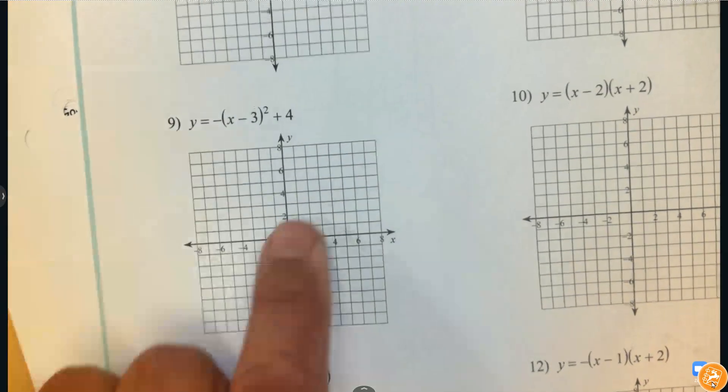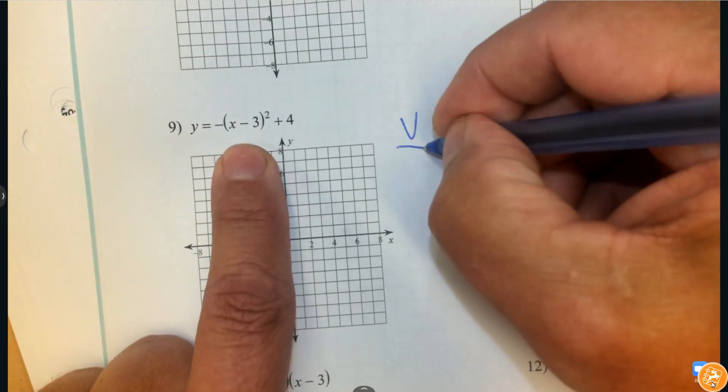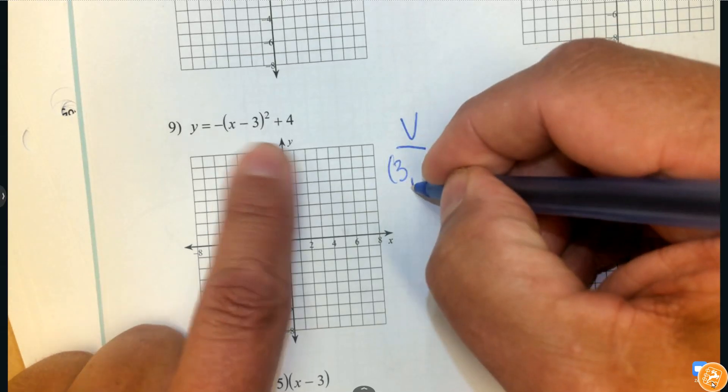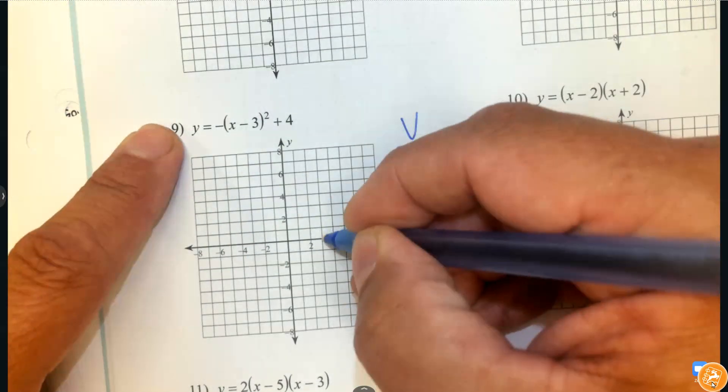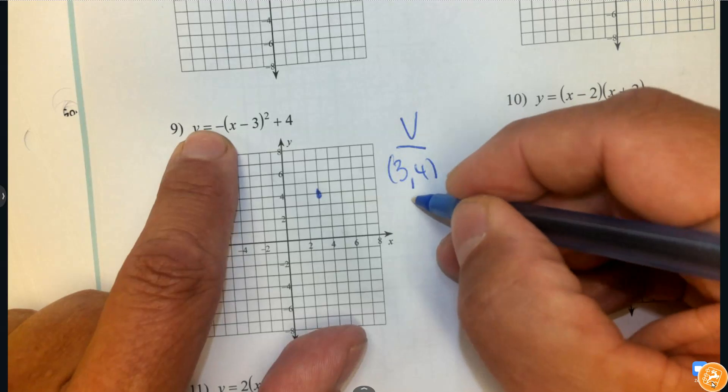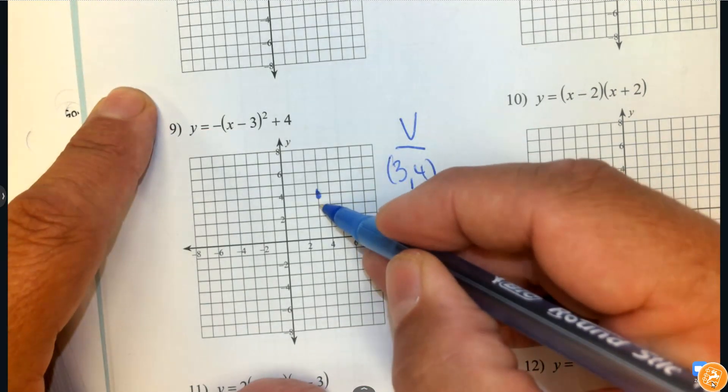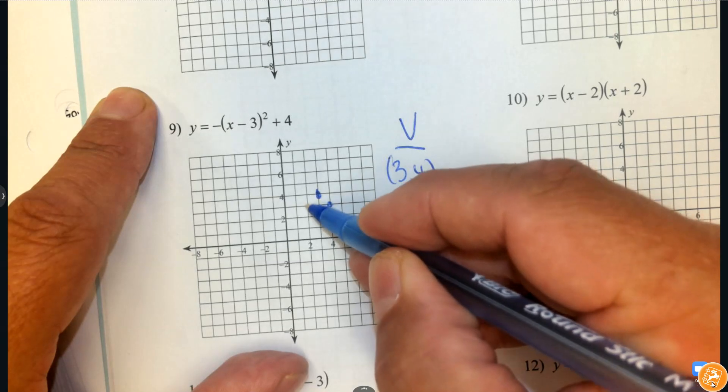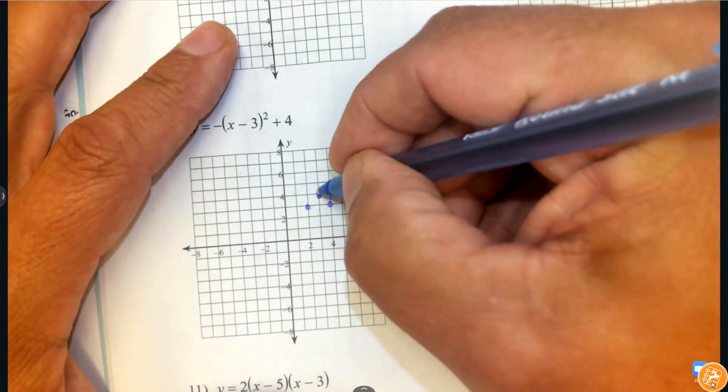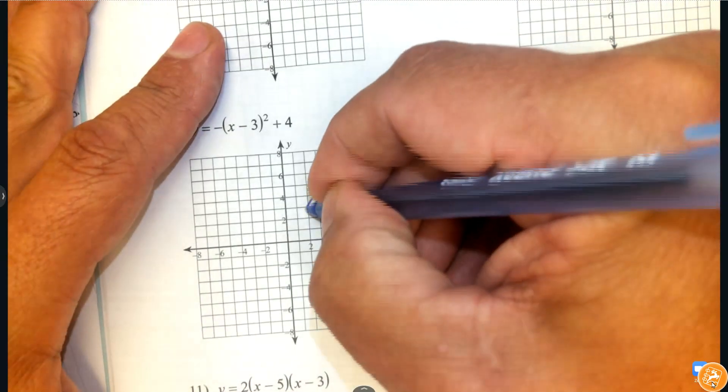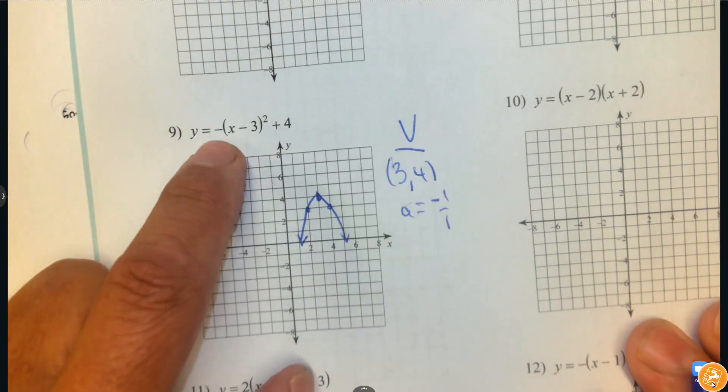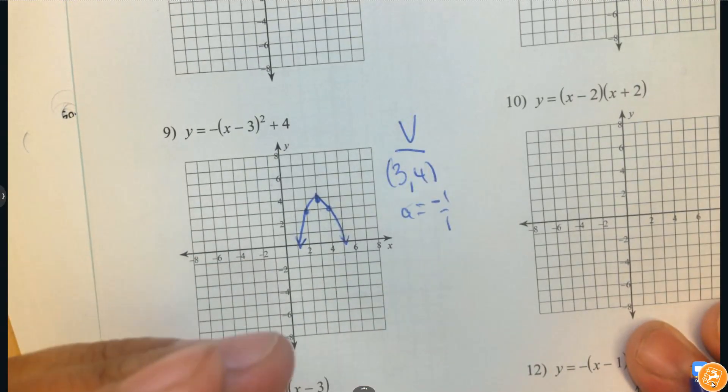Number 9, the vertex. So change the sign 3 and positive 4 and then find it on your graph. And then the A, the number you don't see, is negative 1. So that's going to tell me to go down 1 and to the right 1 and left 1. That means this is concave down. That means it's folding down. So you can see what does that negative do to the parabola as a reflection.